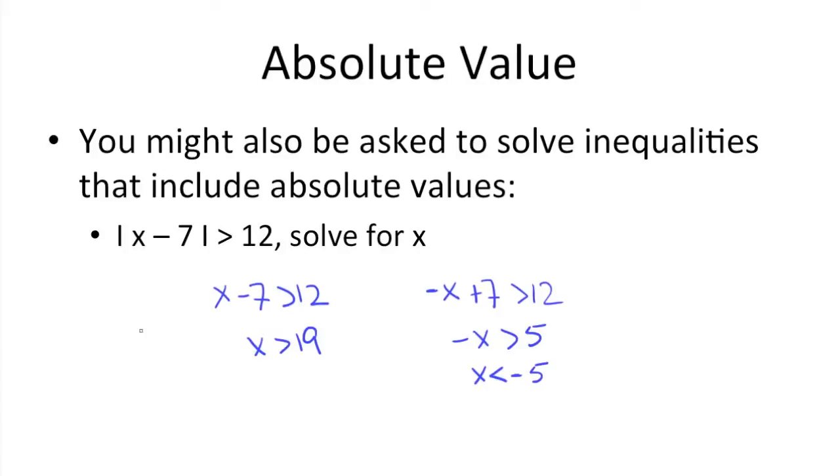And we can confirm that by just looking here. If we were to plug in a number greater than 19, like 20, 20 minus 7 is 13, which is greater than 12. For this answer, we can look for a number that's less than negative 5, so negative 6. Negative 6 minus 7 gets us negative 13. The absolute values remove the negative, so 13 is greater than 12.